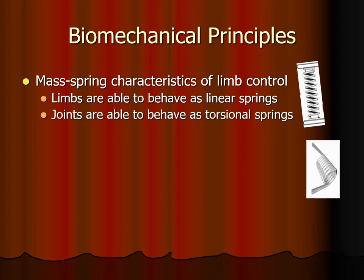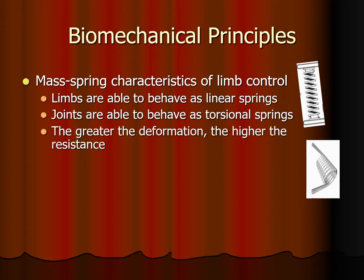Within the limbs, the joints behave like torsional springs. In the leg during running, the hip, knee, ankle, and midfoot all bend and then recoil. The greater the deformation — that is, the greater the spring is compressed or the greater the torsional spring is bent — the greater the resistance.